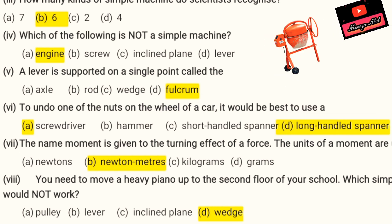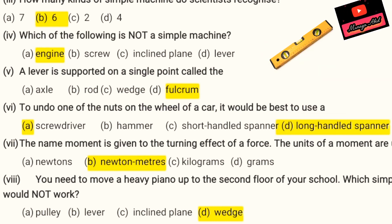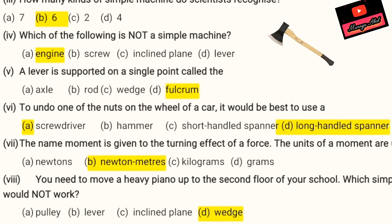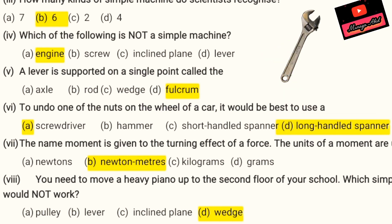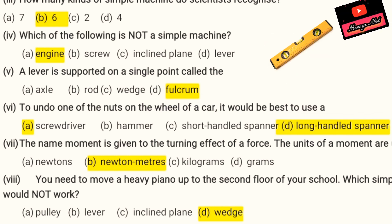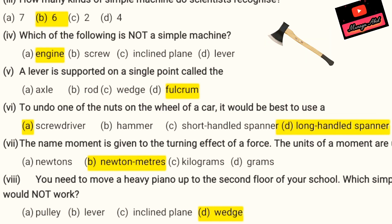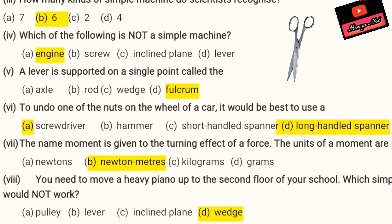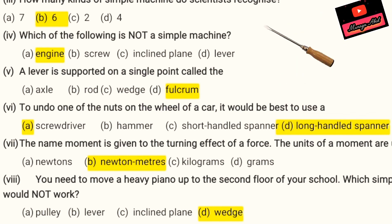Fourth MCQ: which of the following is not a simple machine? The correct answer is A — engine. Fifth MCQ: a lever is supported on a single point called a fulcrum — answer D. Sixth: to undo one of the nuts on a car wheel, it would be best to use a long-handled spanner because we need more force. Seventh: the term 'moment' is given to the turning effect of a force — units are newton meters. Last MCQ: to move a heavy piano to the second floor, you need an inclined plane.